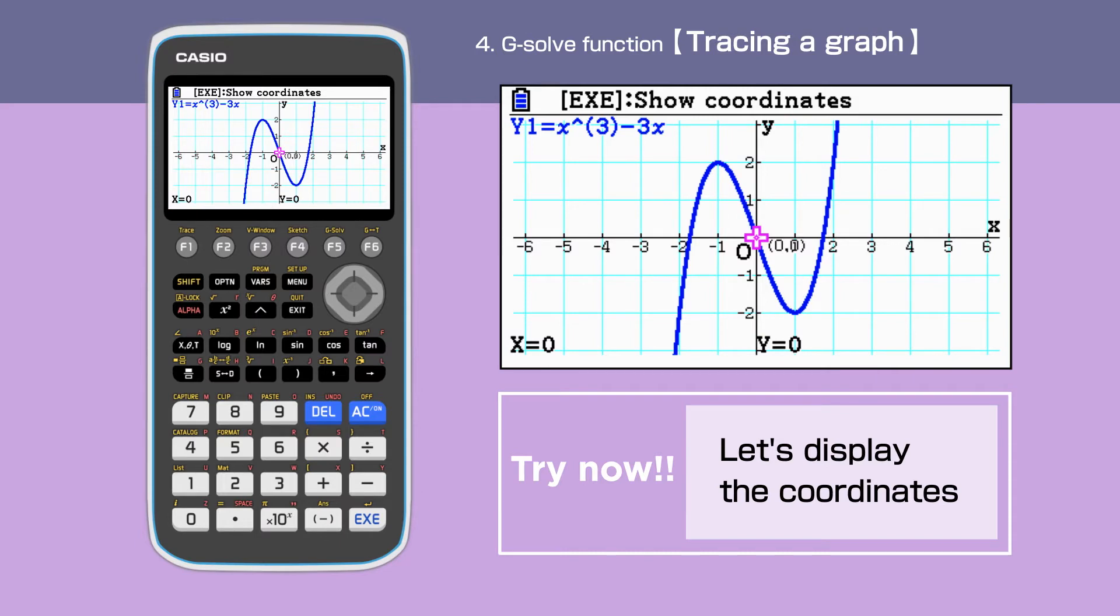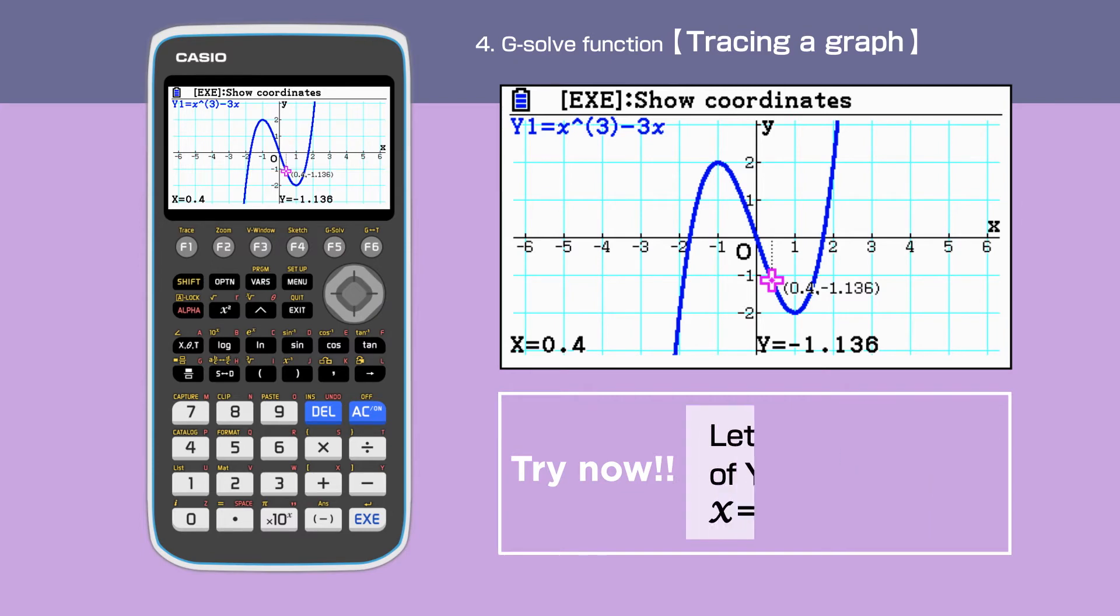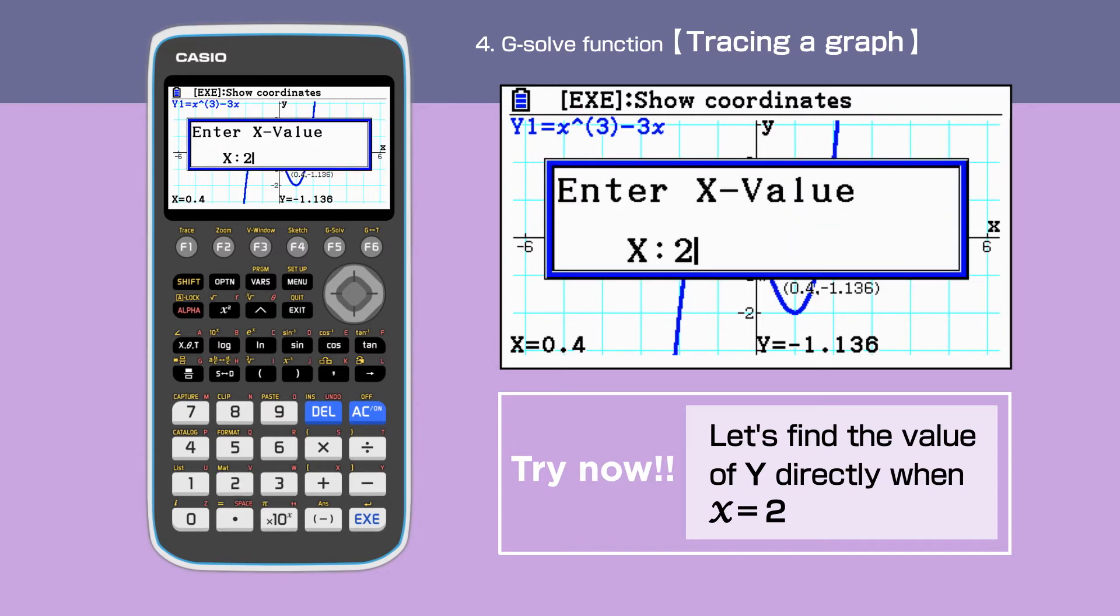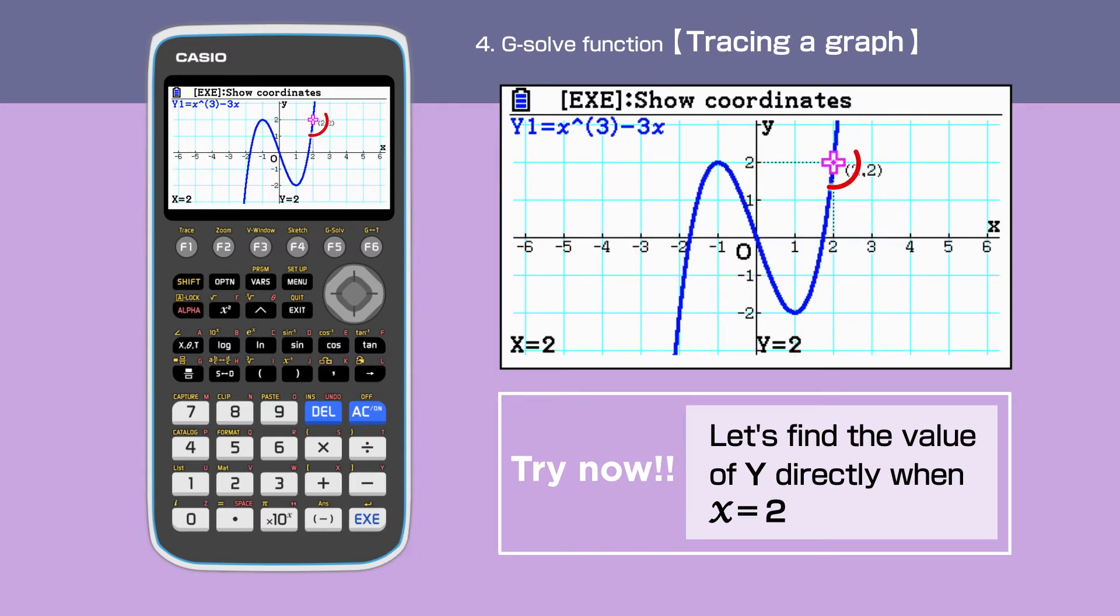We can also move the cursor. It is also possible to find points on a graph directly. For instance, enter 2. The X value window is displayed, indicating to find the value of Y when X is 2. Once we press execute, the cursor will move to this place and give the value of the Y coordinate.